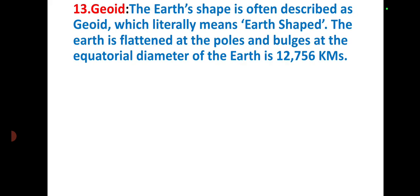Geoid. The Earth's shape is often described as geoid, which literally means Earth-shaped. The Earth is flattened at the poles and bulges at the equator. The equatorial diameter of the Earth is 12,756 kilometers.